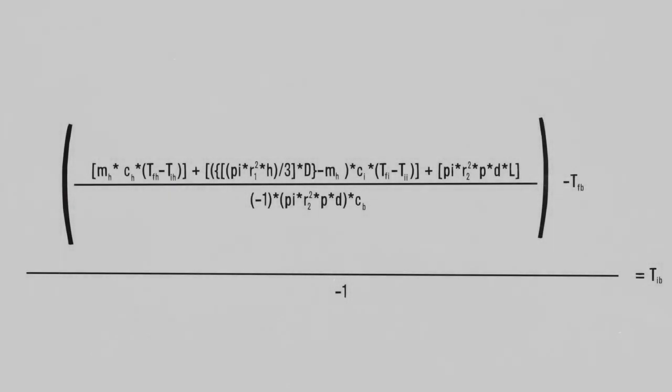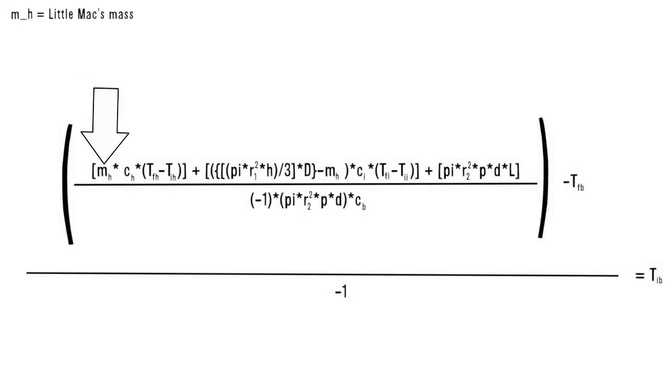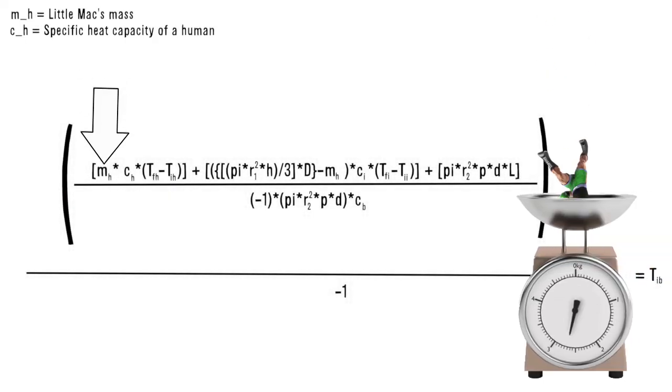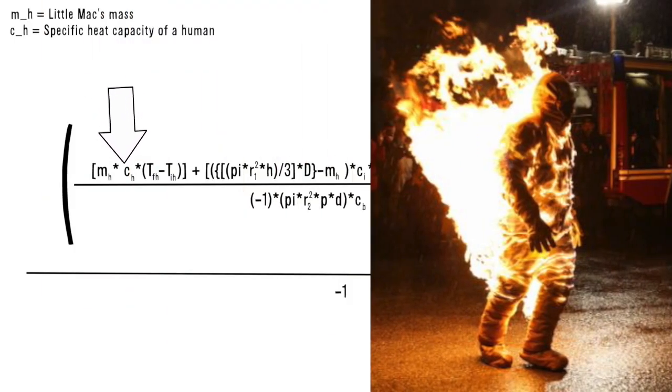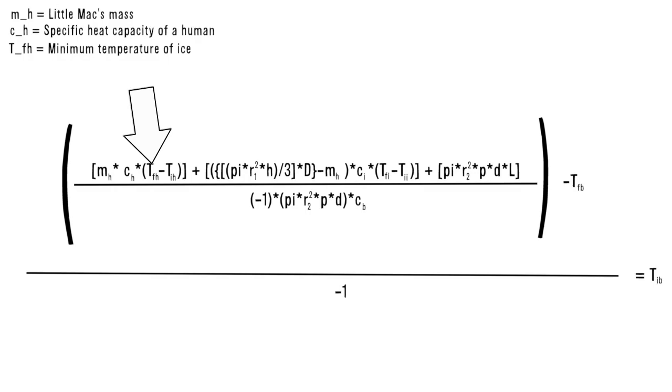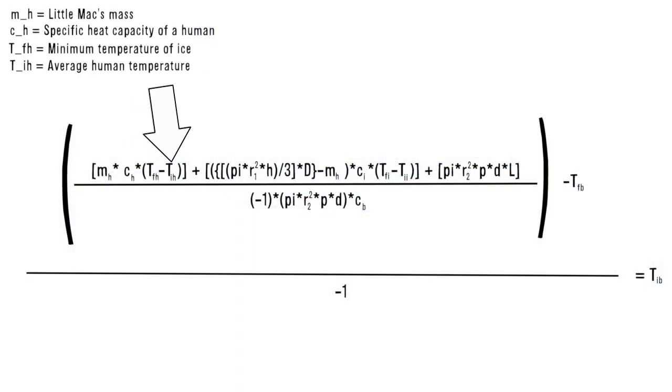Well, let's review what variables we need. M sub H is Little Mac's mass. C sub H is the specific heat capacity of a human. T sub FH is the minimum temperature for ice. T sub IH is the average heat of the human body.